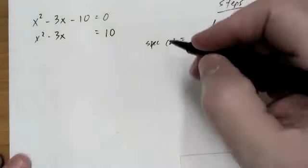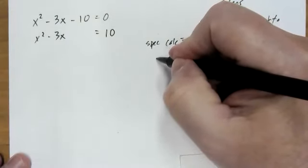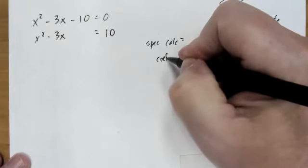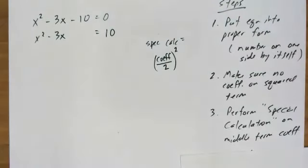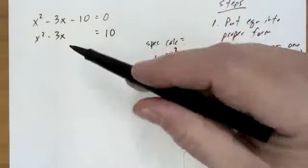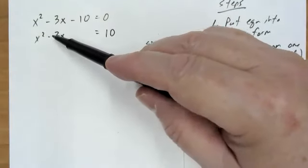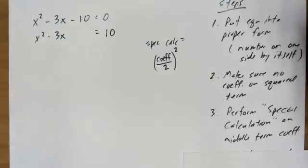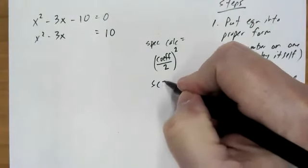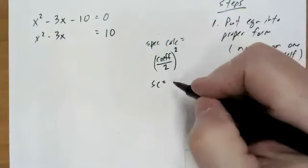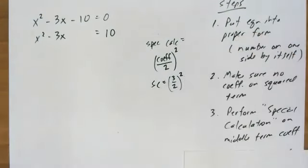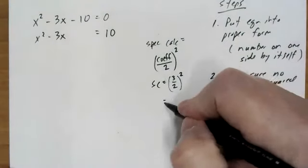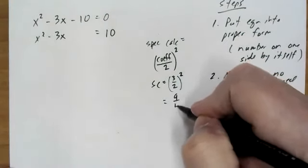Here's the special calculation. You take the middle term coefficient, you divide it by two, and then you square the whole thing. In this case, I just care about this coefficient number. So for this problem, my special calculation is: here's my coefficient, I divide it by two, and then I'm going to square it. So my special calculation ends up being 9 fourths.